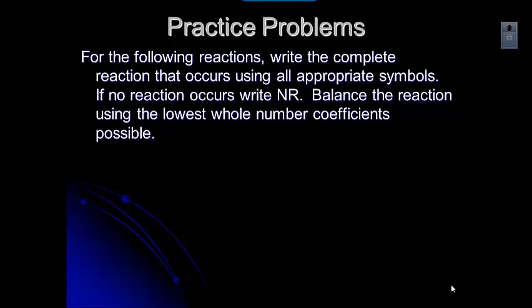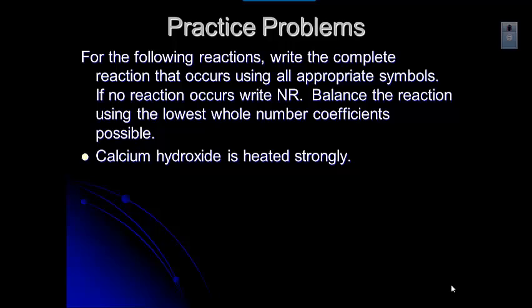Let's look at a practice problem. Remember the standard instructions: write the complete reaction with all the symbols. If there's no reaction, write NR, and then balance with lowest whole number coefficients. So calcium hydroxide is heated strongly. When you look at that, you can see there is one reactant, which should give you a hint that the reactant is decomposing. There's only one option for that — look at your reference table and see if you can figure out which one it is.